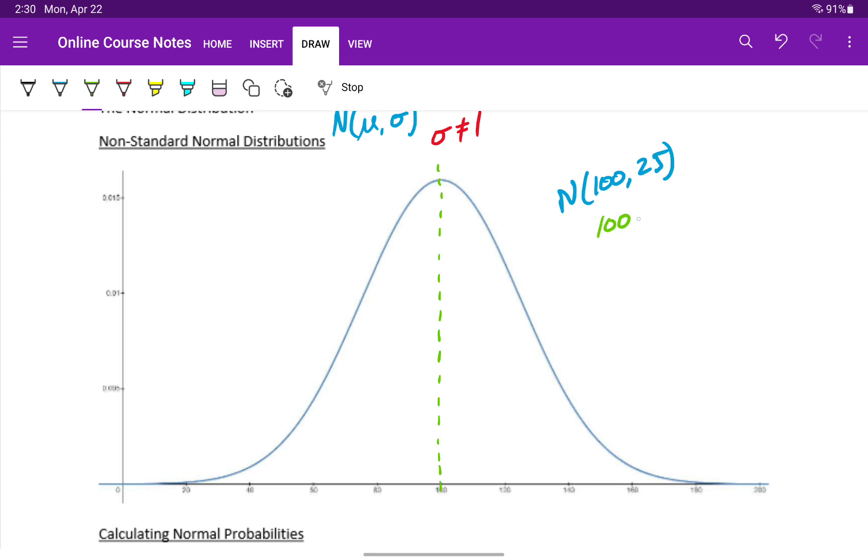If we start with our mean of 100 and subtract 25, we get a value of 75. That tells us one standard deviation below the mean occurs at 75, and one standard deviation above the mean occurs at 125.